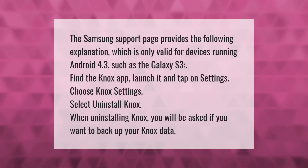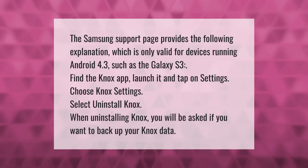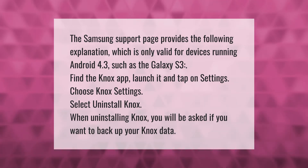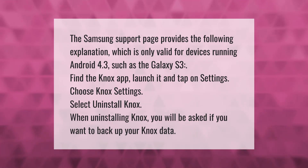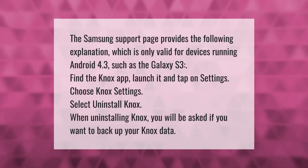The Samsung support page provides the following explanation, which is only valid for devices running Android 4.3, such as the Galaxy S3. Find the Knox app, launch it, and tap on Settings. Choose Knox Settings, select Uninstall Knox. When uninstalling Knox, you will be asked if you want to back up your Knox data.